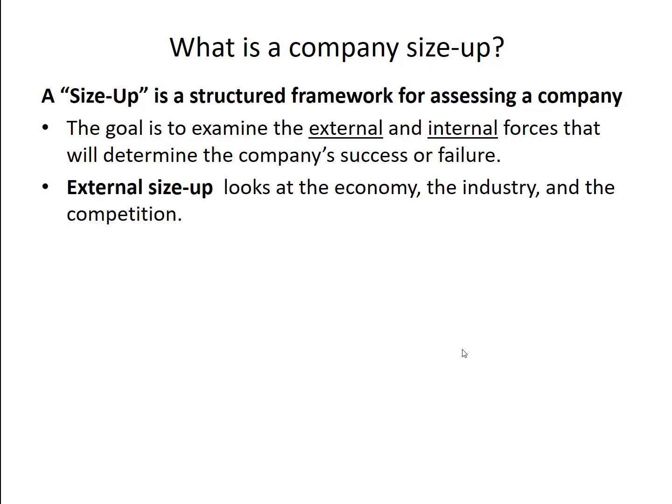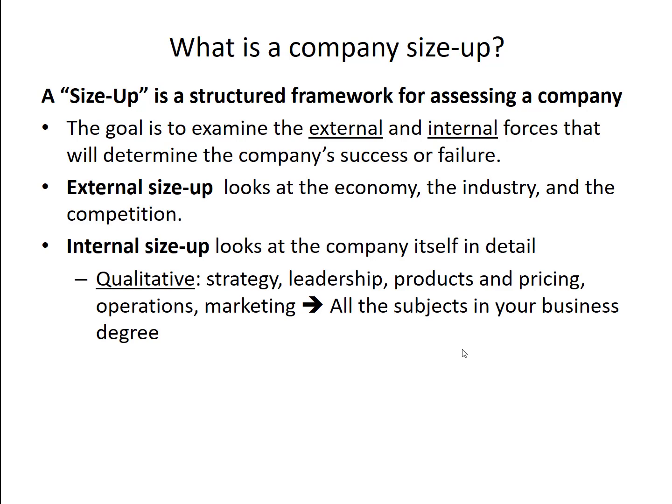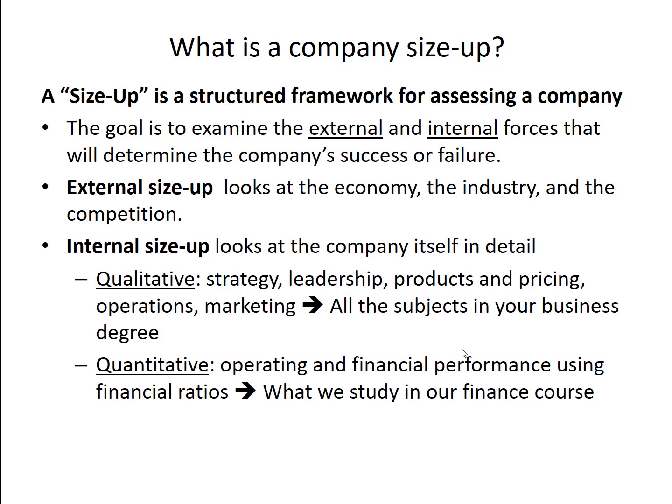From an external point of view, we're going to look at three factors: the outlook for the economy, the company's industry, and the degree of competition within that industry. From an internal point of view, we're going to look bottom-up at two different dimensions that are qualitative and quantitative. From a quantitative point of view, we're going to talk about strategy, leadership, products and pricing, and marketing and operations. Quantitatively, we're going to use financial ratios and financial statements to evaluate both the operating performance of the company as well as its financial performance.